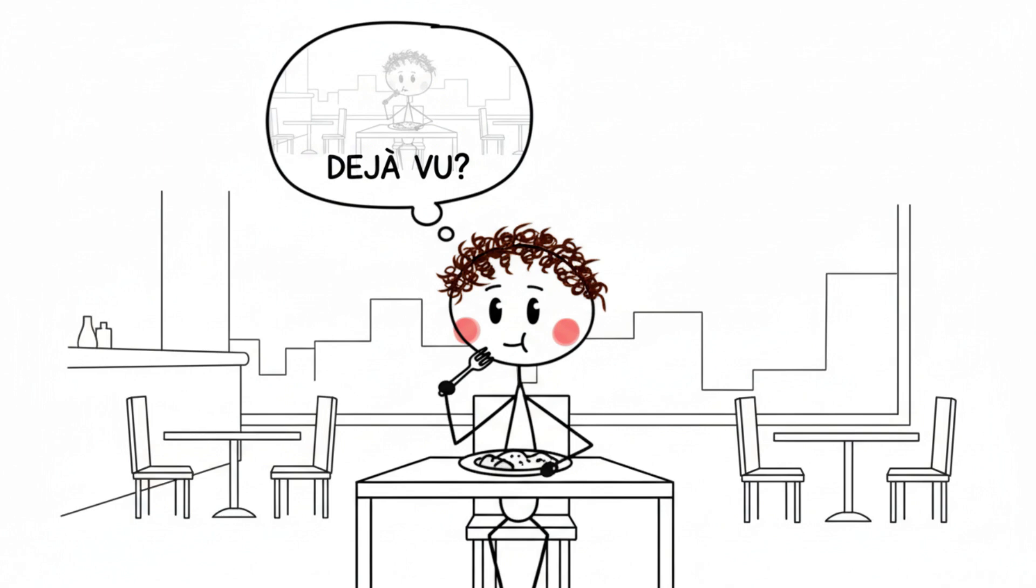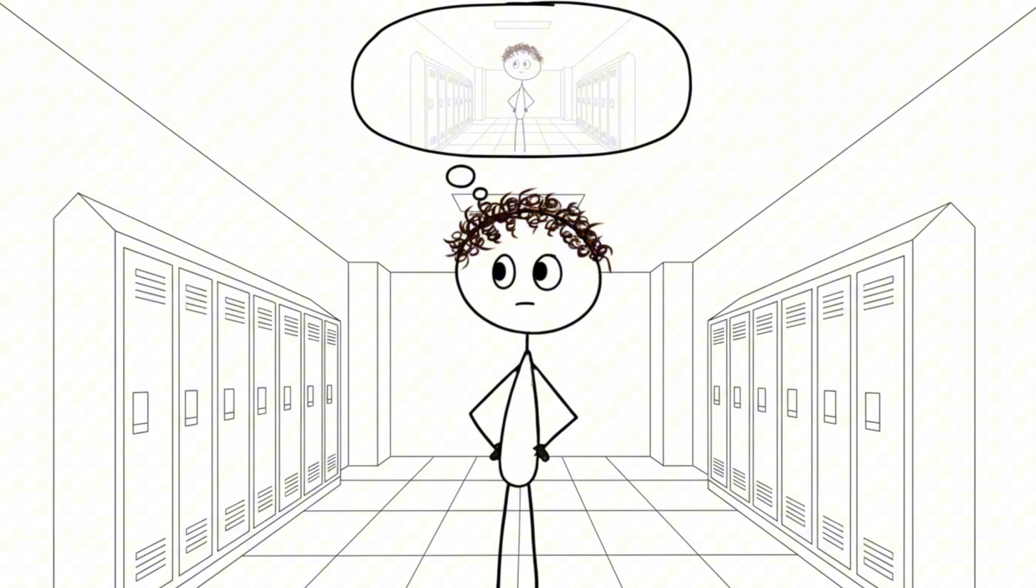Turns out it's basically your brain misfiring like a shorted-out toaster. Here's what's actually happening: your temporal lobe, the part of your brain that handles memory, is supposed to sort experiences into new and old, but sometimes it gets lazy. It sends the familiar signal at the wrong time, and suddenly your brain thinks this random hallway or conversation has happened before.